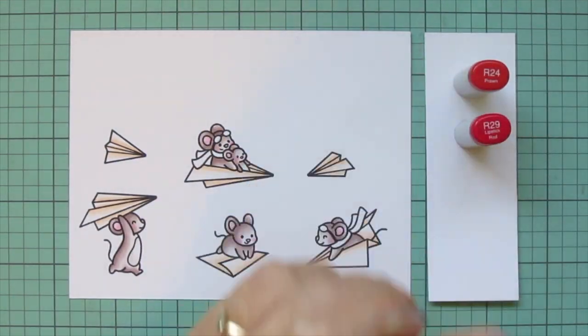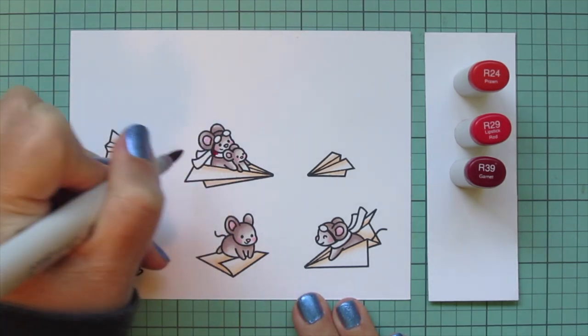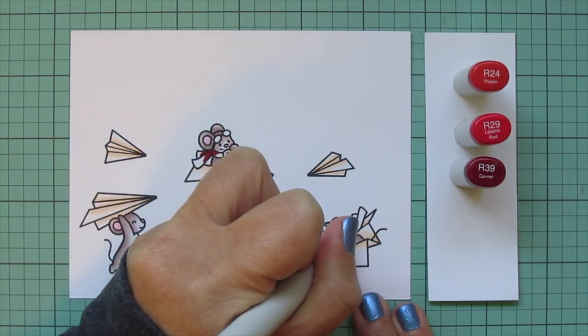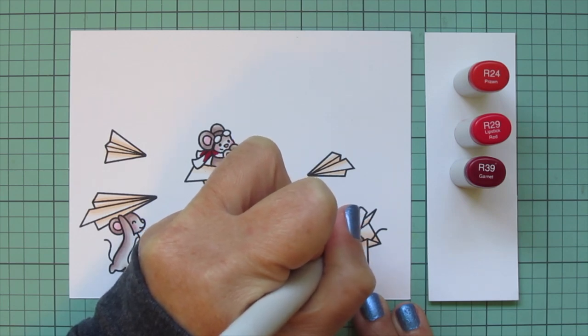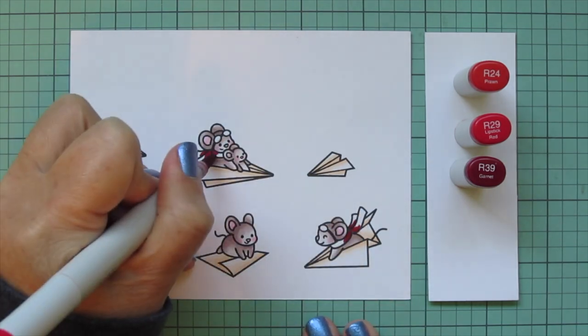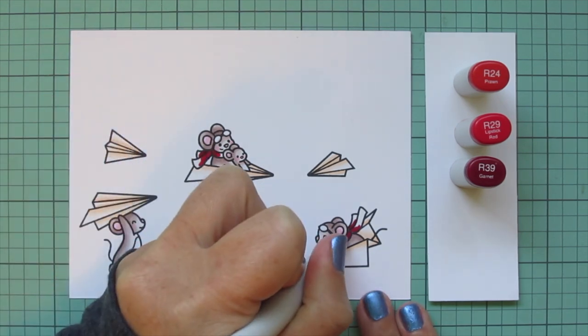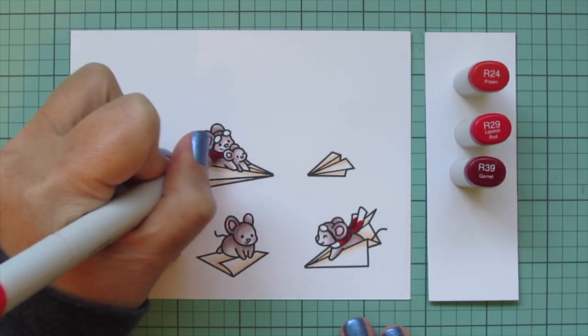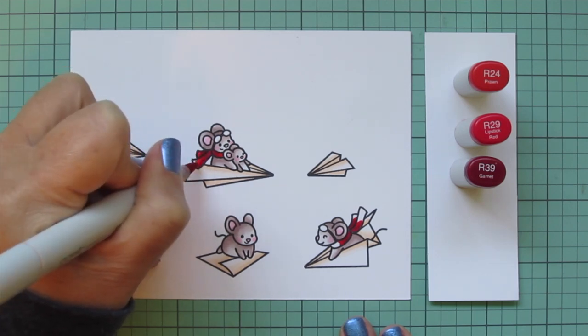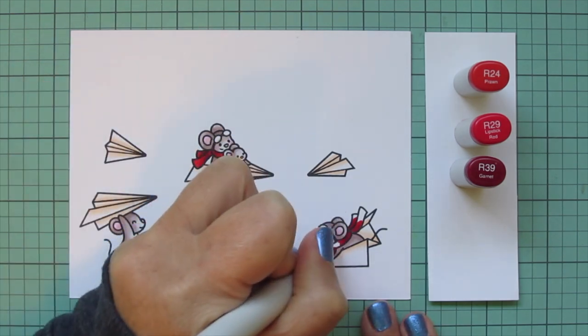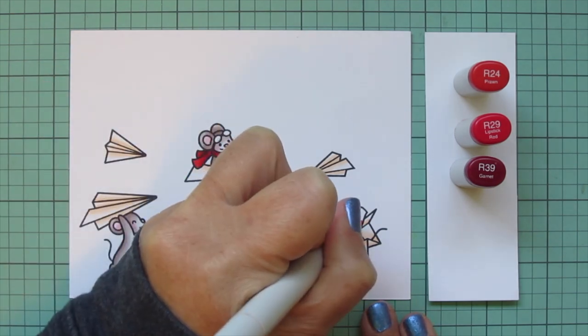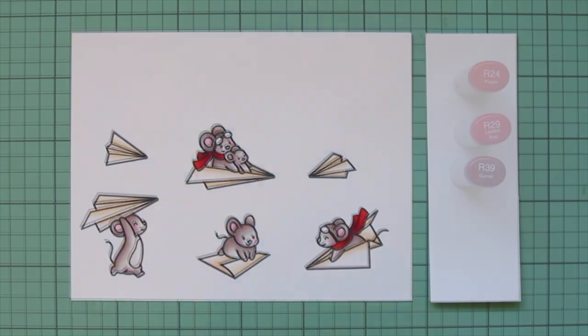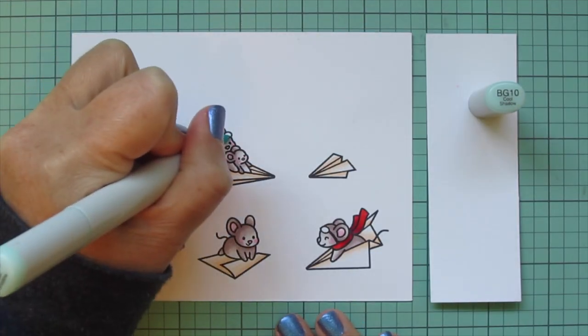For the two mice that are wearing scarves, I wanted a pop of something bright since everything so far was pretty neutral, so I decided to do red. I'm using R24, R29, and R39. A little R39 where the fabric is knotted in the back and then blending that out with the R29 and then I'll use that R24 for a nice highlight. This is one of my favorite red combos. I just love the depth that you get and also the richness from the lighter shades.